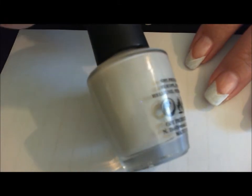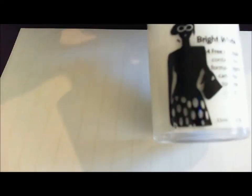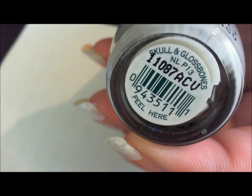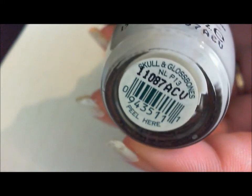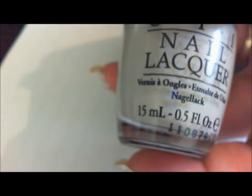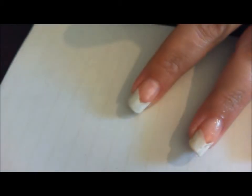So if you can't find a gray polish, you can take a white polish and just mix in a drop of black until you get the right shade of gray. Fortunately for me, I found this Skull and Gloss Bones from the Pirates of the Caribbean collection by OPI. So if you can find Skull and Gloss Bones, this is the perfect gray for Ohio State.